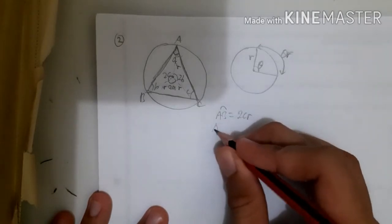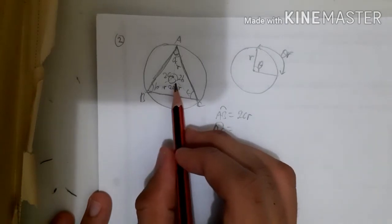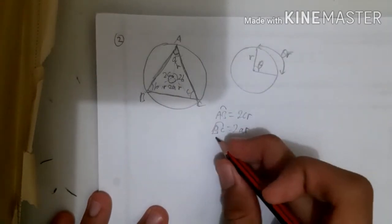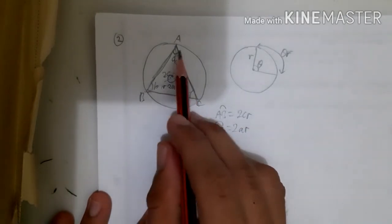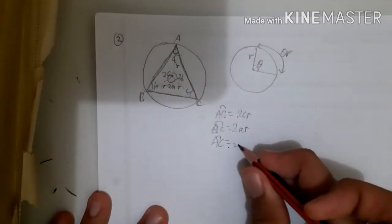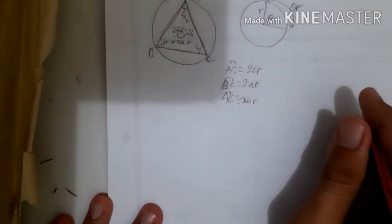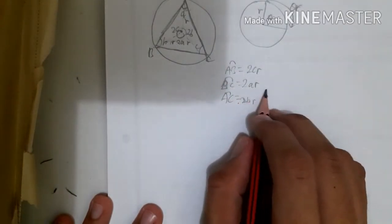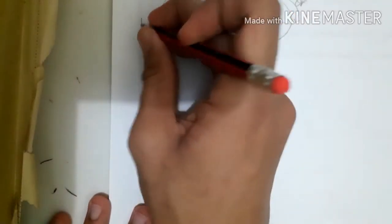Arc BC corresponds to central angle 2A, so arc BC = 2AR. Remember that formula. And arc AC corresponds to central angle 2B, so arc AC = 2BR. So that's the answer for number 1: arc AB = 2CR, arc BC = 2AR, arc AC = 2BR.